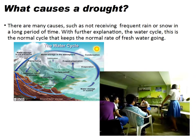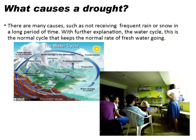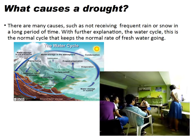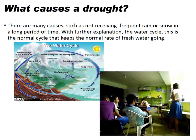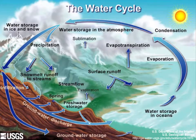What causes a drought? There are many causes of a drought, such as not receiving frequent rain or snow in a long period of time. With further explanation — the water cycle. This is the normal cycle that keeps the normal rate of fresh water going.